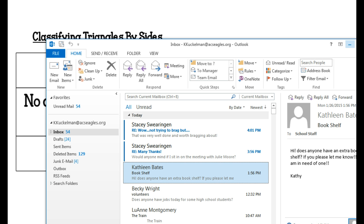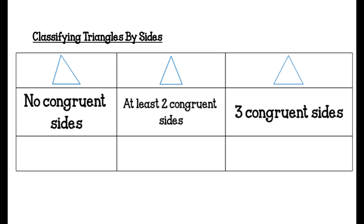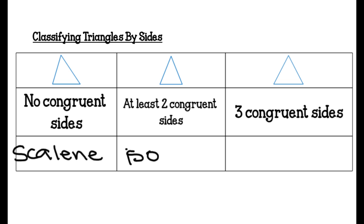Another way that we can classify triangles is by their sides. When we have no congruent sides, that is a scalene triangle. When we have at least two congruent sides, it is an isosceles triangle. And three congruent sides is equilateral.